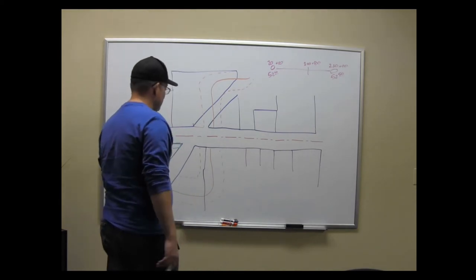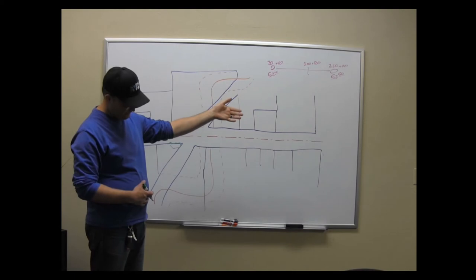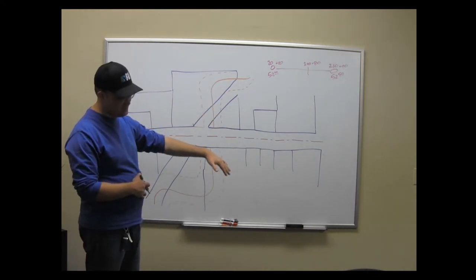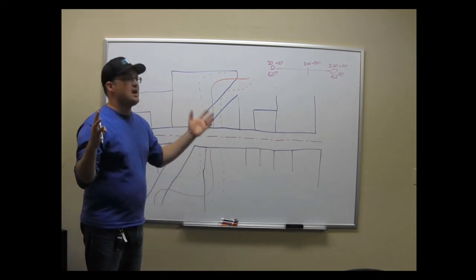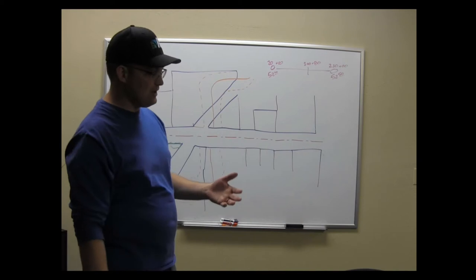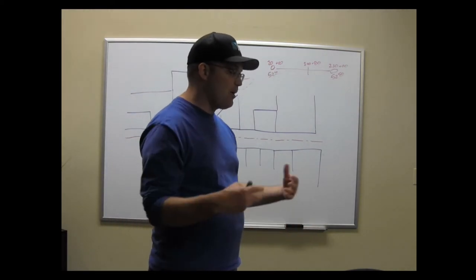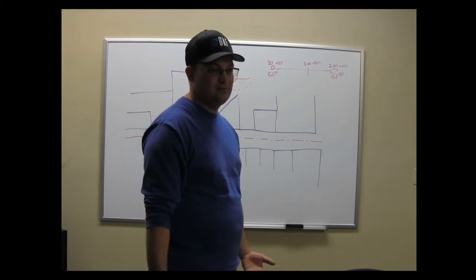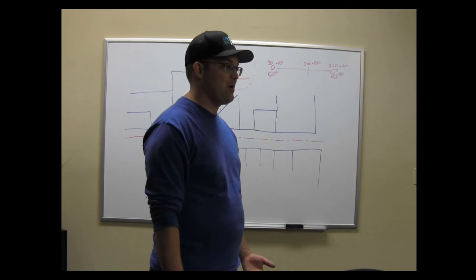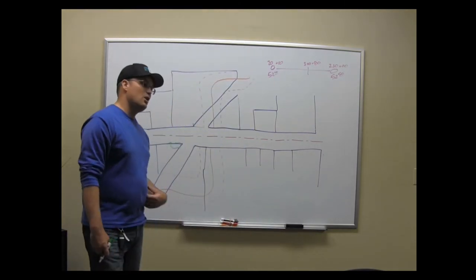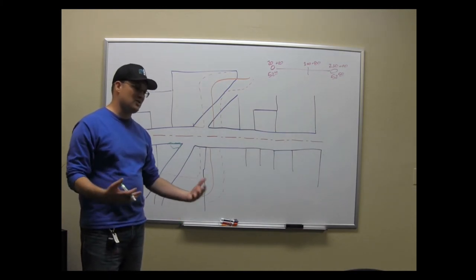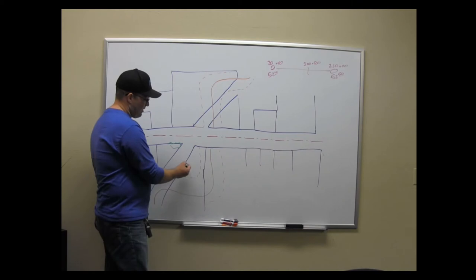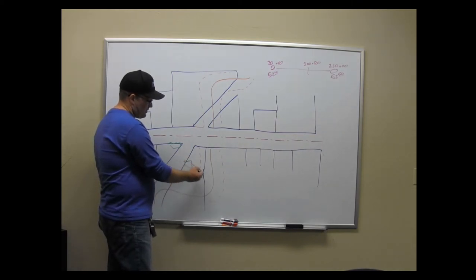The engineer comes up with where they want the new road, canal, or whatever, and then the surveyor takes that design and develops a right-of-way footprint. Engineers should not come up with their own right-of-way footprint — that's a surveyor thing. The engineer gives you the footprint of the physical improvements, and then you start asking questions: How much room do you need for maintenance? What about access to adjacent properties?